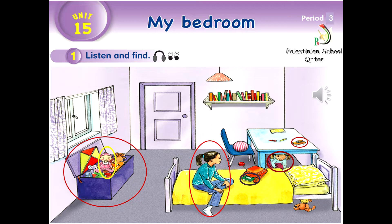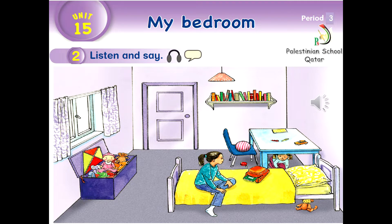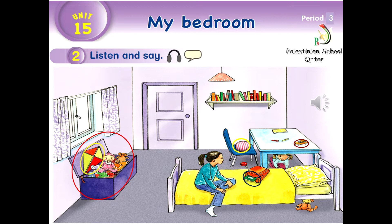Well done! My dear students, listen to the track and try to repeat after it. Track 58, Unit 15, Period 3, Activity 2: Listen and say. Where's the kite? It's in the box. Where's the book? It's in the bag. Where's the car? It's on the table. Where's the box? It's under the window. Where's the ball? It's on the chair. Where's the yo-yo? It's under the chair.